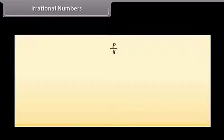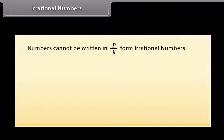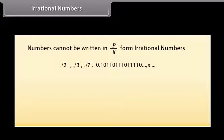Irrational numbers. You must be wondering if there are numbers which are not in the form of P by Q. Yes, there are numbers which cannot be written in the form P by Q. Those numbers are called irrational numbers. For example, square root 2, square root 3, square root 7, 0.10110111011110..., pi, and so on.